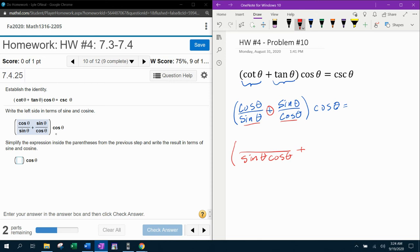So for my first fraction, notice that for sine theta, I gave it a cosine. If I give it to the bottom, I have to give it to the top. So that's going to be cosine theta times cosine theta, which will be cosine squared theta.